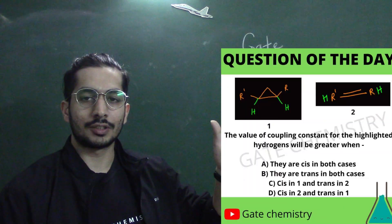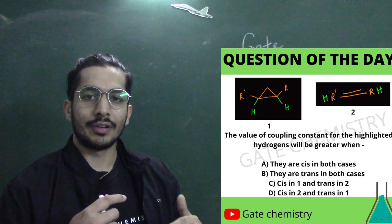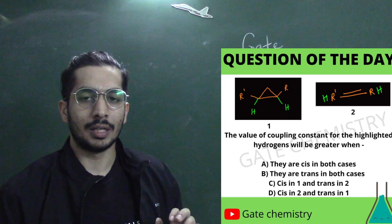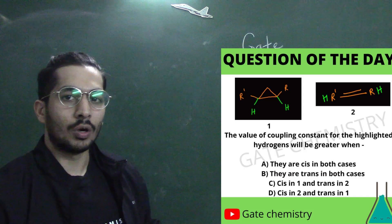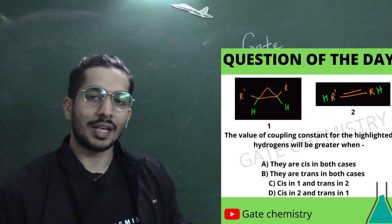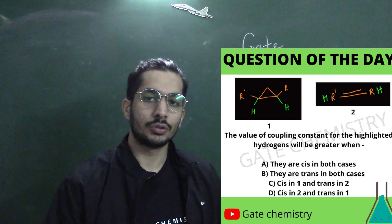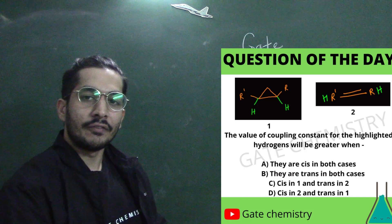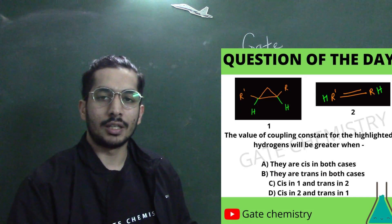We have trans coupling happening in alkenes and we have trans/cis coupling happening in cyclopropanes. Now, what is the difference — is there any difference between the coupling values? If you want to determine the coupling constant values, we take help of the Karplus equation.